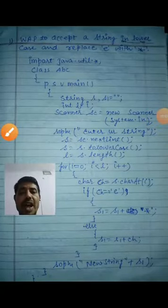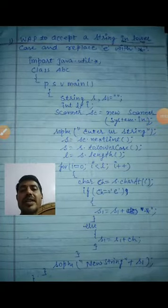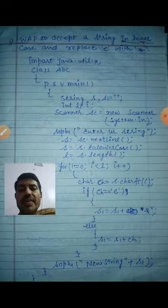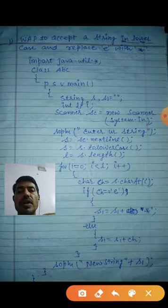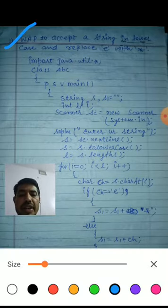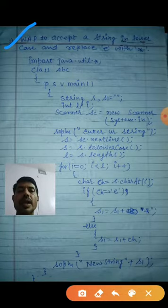Good morning dear children. I am here to explain the last question which you have given yesterday. Now, look here. The first one is: write a program to accept a string and replace e with star.